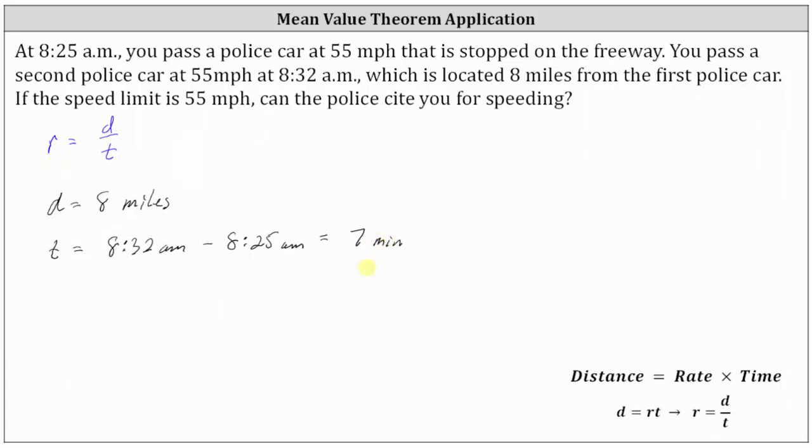So now going back to the formula, we know the average rate is equal to the distance of eight miles divided by the time of seven minutes. But notice right now, the units are miles per minute. And we're trying to compare it to a rate in miles per hour. And therefore, we'll have to convert minutes to hours by multiplying by a unit fraction.